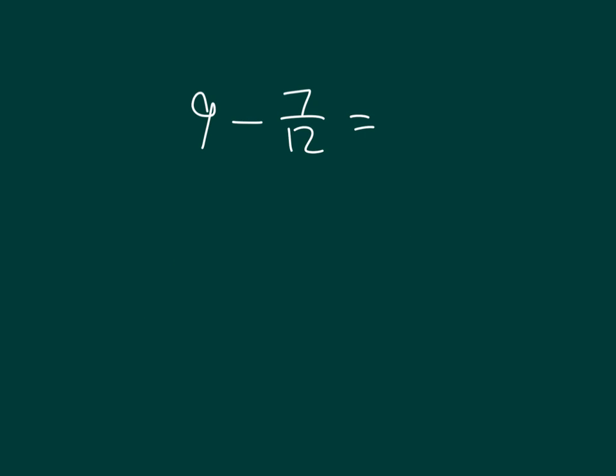Here's one last problem, 9 minus 7 twelfths. We will rewrite 9 as 8 plus 1, and we're still subtracting 7 twelfths. Which will we rename to twelfths, 8 or 1?